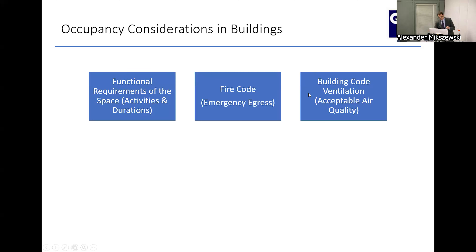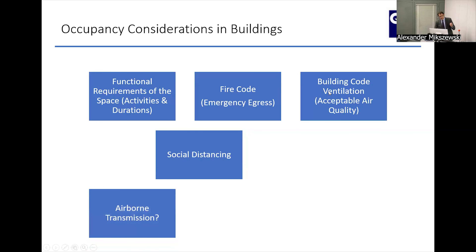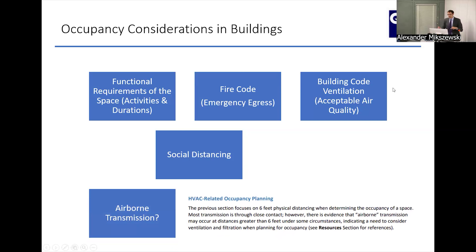Now we have two other considerations: we have social distancing — those circles put everywhere — which is presumably the short-range one or two meter droplet transmission range. But now we also have airborne transmission as a new consideration with respect to the density of occupants in a room. Through the help of colleagues, we were finally able to start people thinking that it shouldn't just be these circles — you should also consider the ventilation capacity of the space to inform occupant density as we reoccupy buildings.